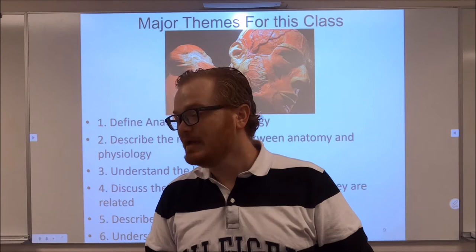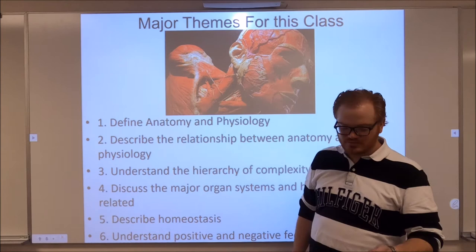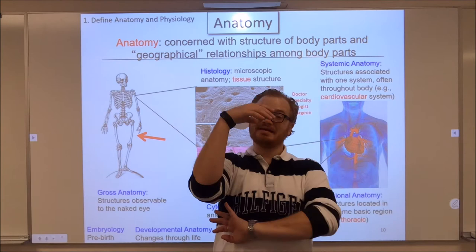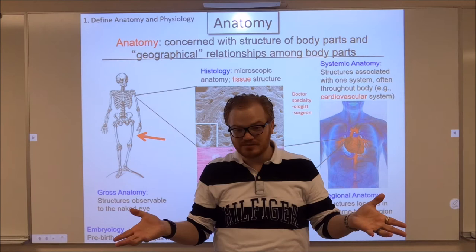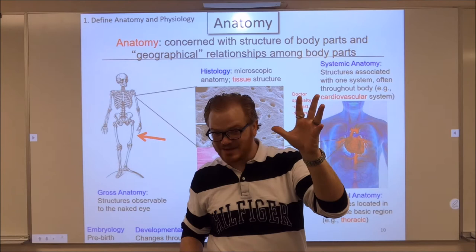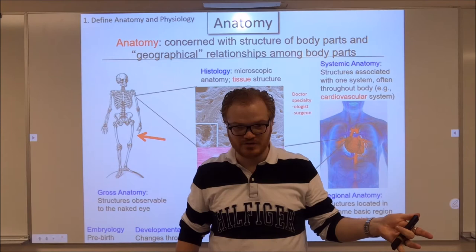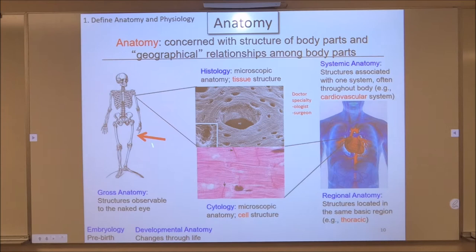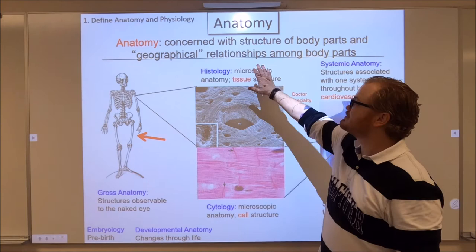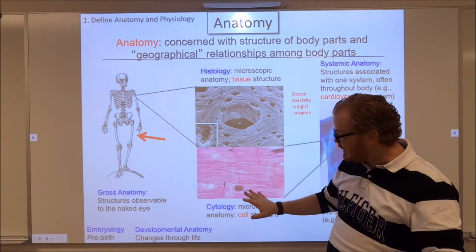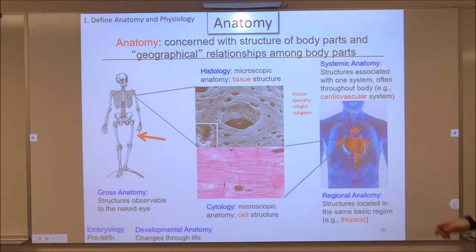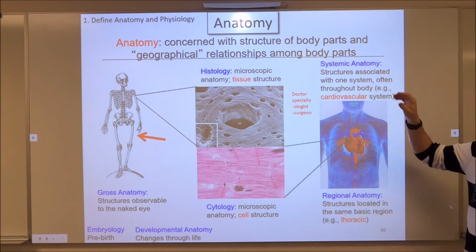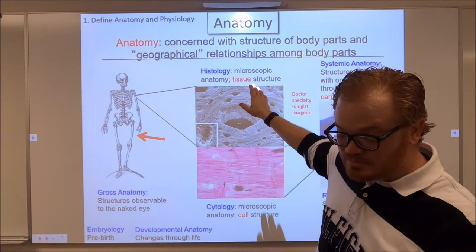Let's define anatomy and physiology. Anatomy is parts and pieces — here's a hand: one, two, three, four, five fingers. That's anatomy. But I can pick things up with that hand — that's physiology. Anatomy is the parts; physiology is the function. We can refer to gross anatomy for large things. Histology and cytology would be small things — histology is looking at tissues, cytology is looking at cells. You could also study systemic anatomy, like the cardiovascular system.